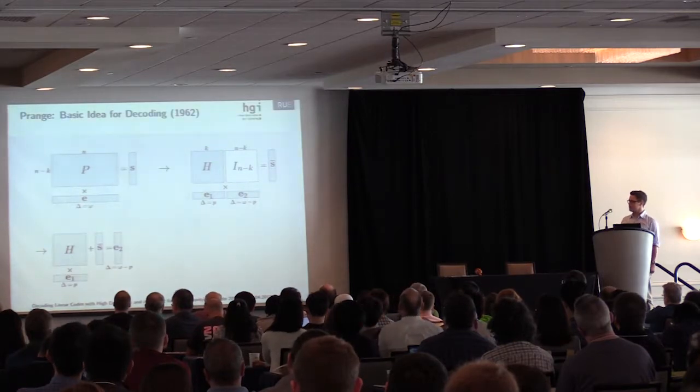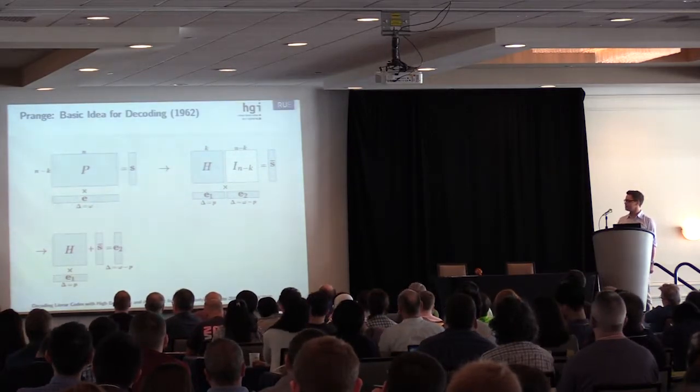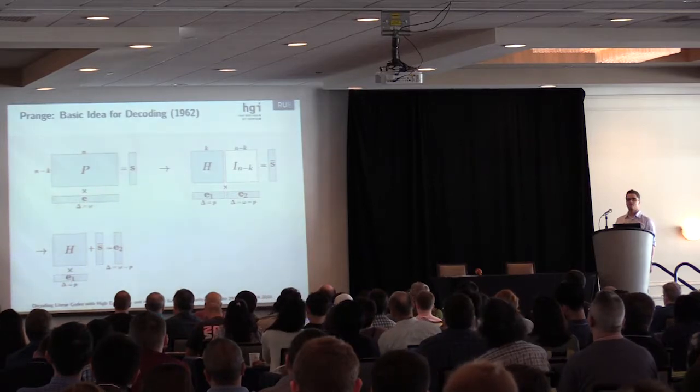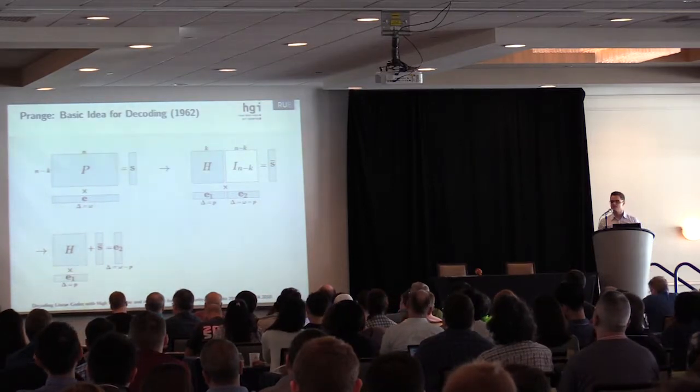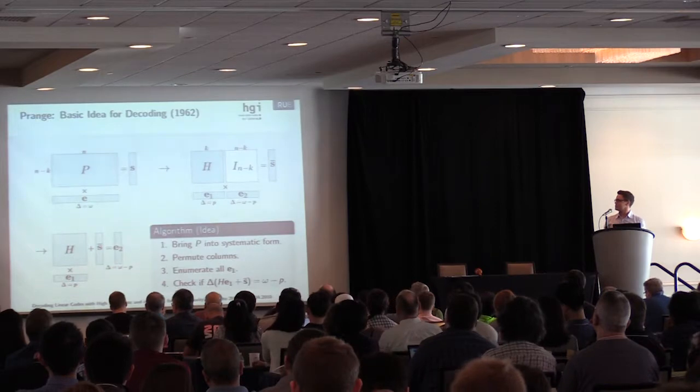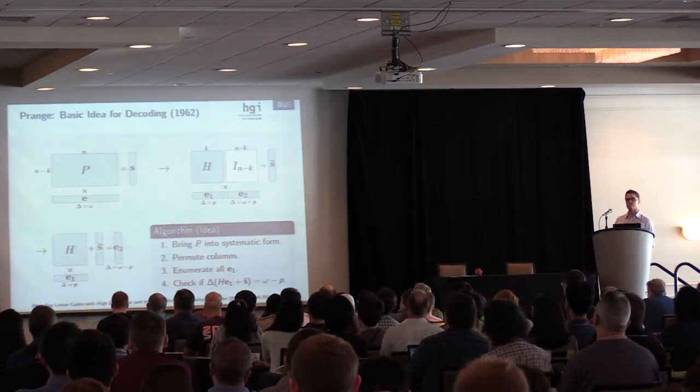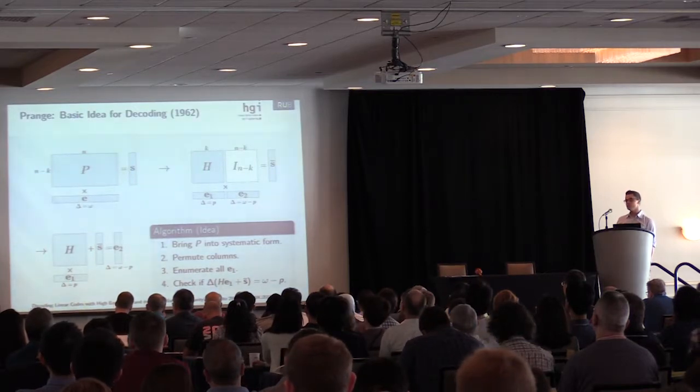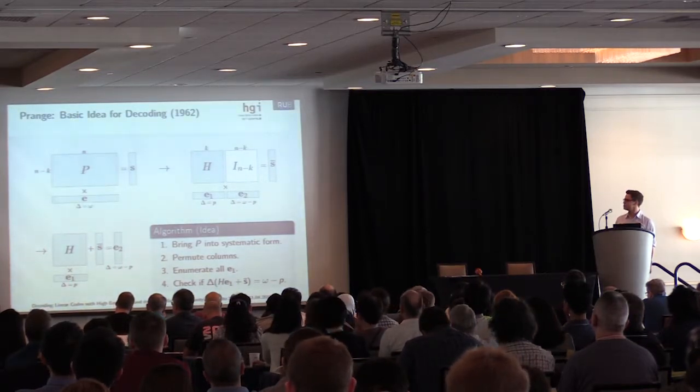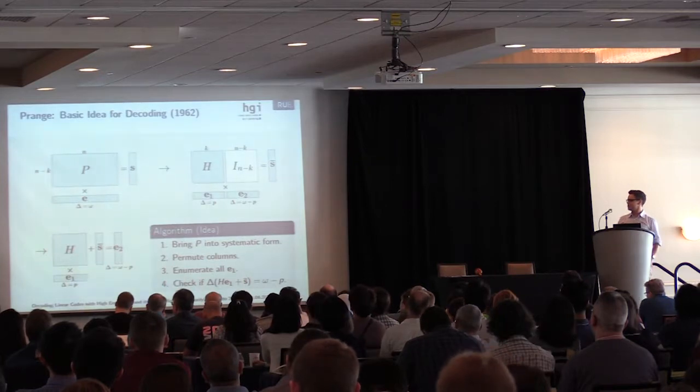Now we can rewrite this equation. We now have H e1 plus S equals e2. To recall the steps from Prange, the first step is to bring H into systematic form. Then we permute the columns and hope for some good weight distribution.